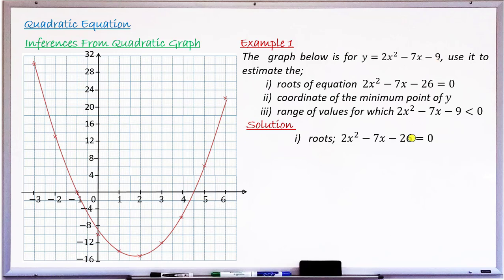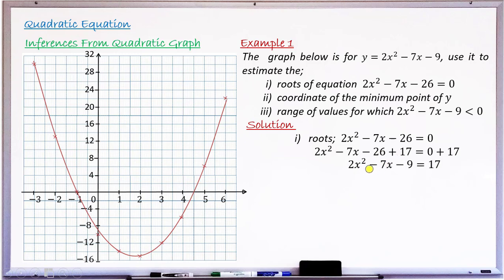To make −26 become −9, we add +17. Adding 17 to −26 gives −9. But after adding 17 to the left side, we must also add 17 to the right-hand side. So after adding: −26 + 17, we now have 2x² − 7x − 9 = 17. The left-hand side is exactly the quadratic whose graph is displayed.